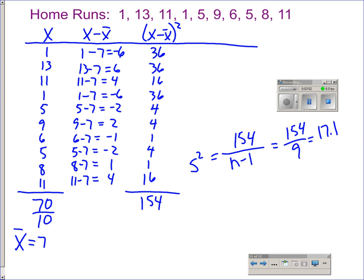To find the standard deviation, you take the square root of that number. Standard deviation is given the symbol s. So it's the square root of 17.1, which is 4.14. What we can say is that for this team, a typical amount of variation from the mean is 4.14 home runs.